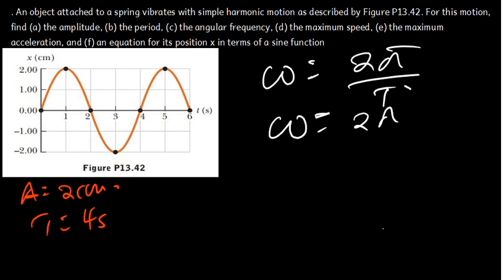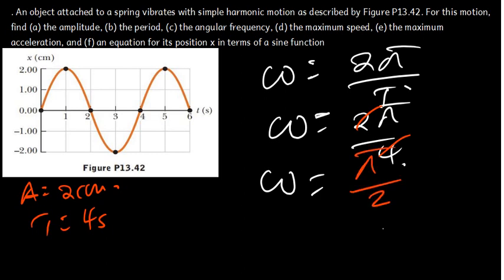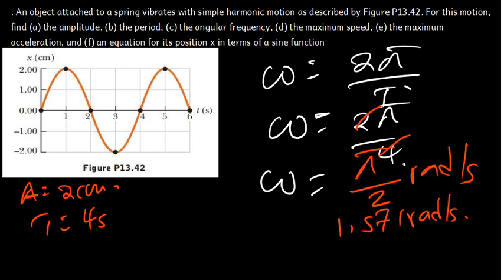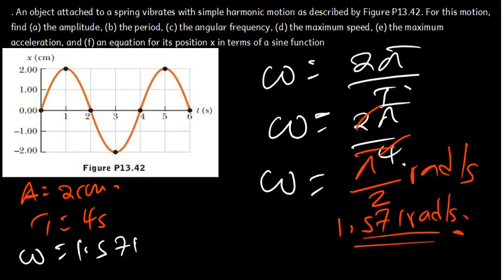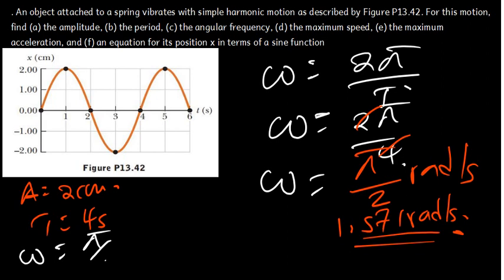Plugging in the values: ω = 2π divided by 4. The 2 and 4 simplify to give π/2. So our angular frequency is π/2 radians per second, which is approximately 1.571 radians per second.